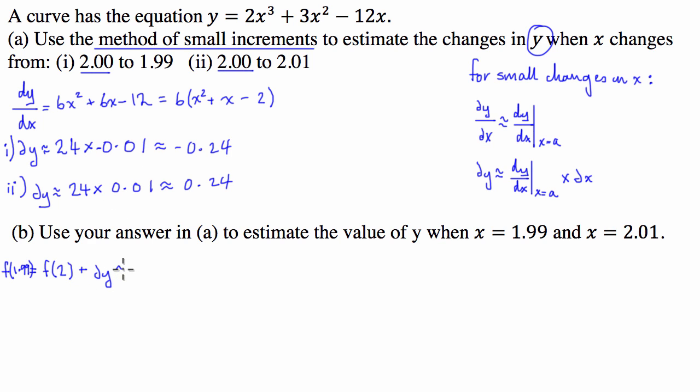Now that can be approximated to be the function at 2 - we can substitute 2 into the top one: 2³ is 8 times 2 is 16, plus 2² is 4 times 3 is 12, 16 plus 12 is 28, 28 minus 24 is just 4. So the function at 2 is 4, and we're plus delta y which in the first instance is -0.24, so we minus 0.24 and that's approximately equal to 3.76.